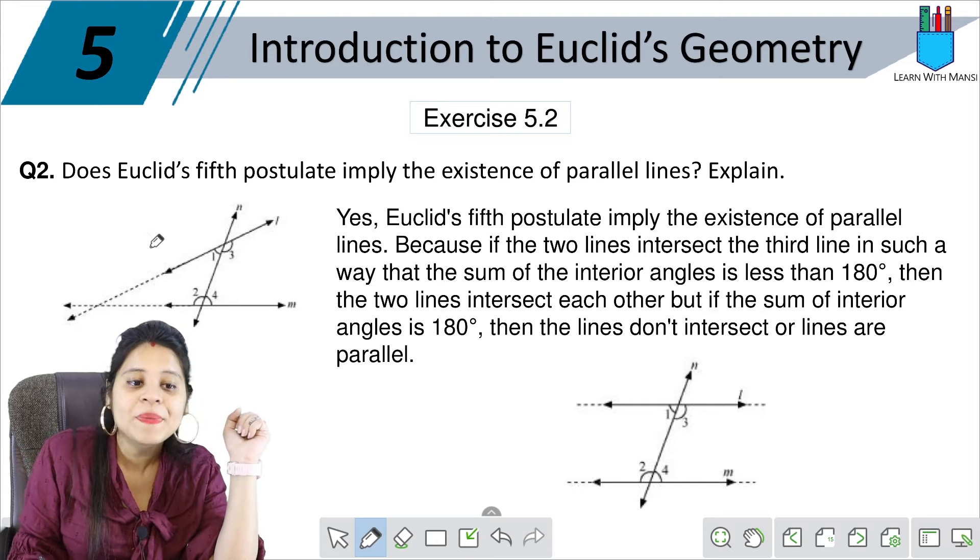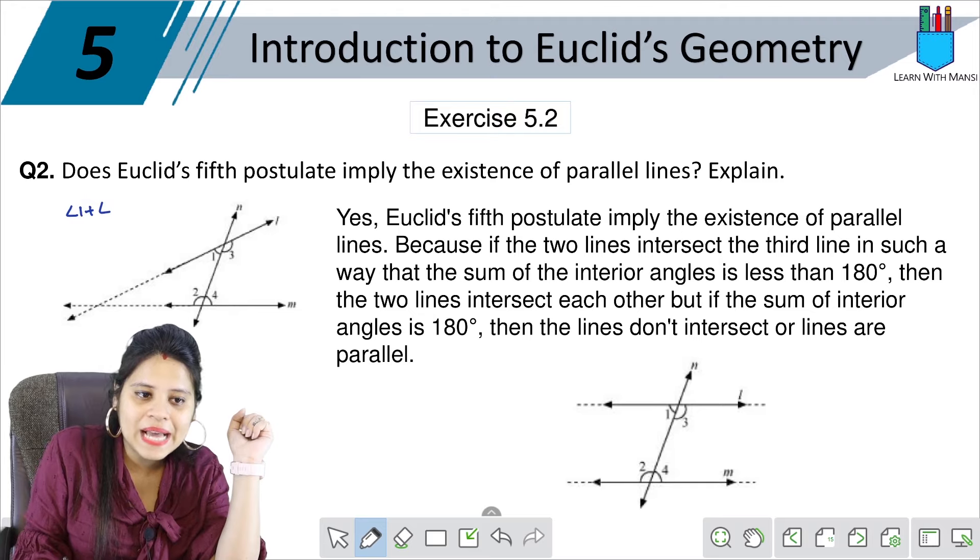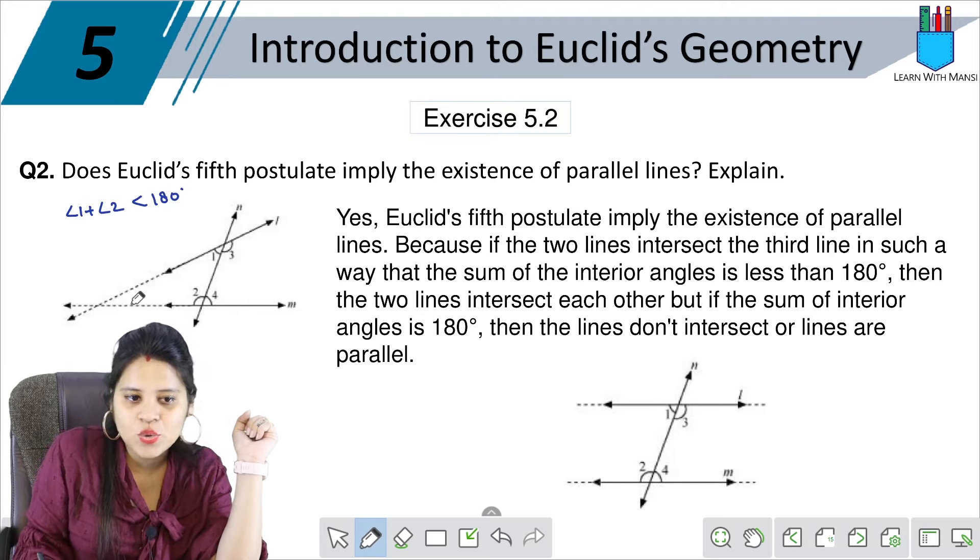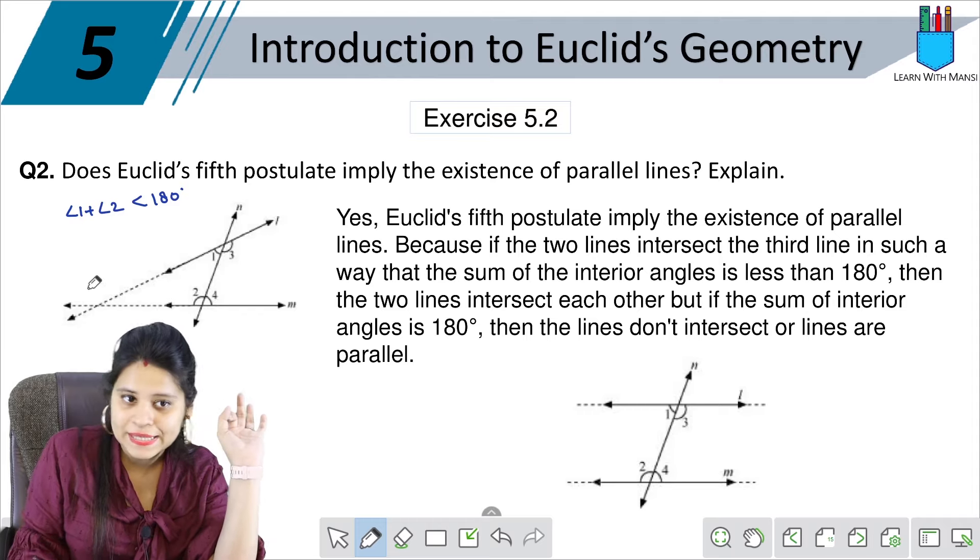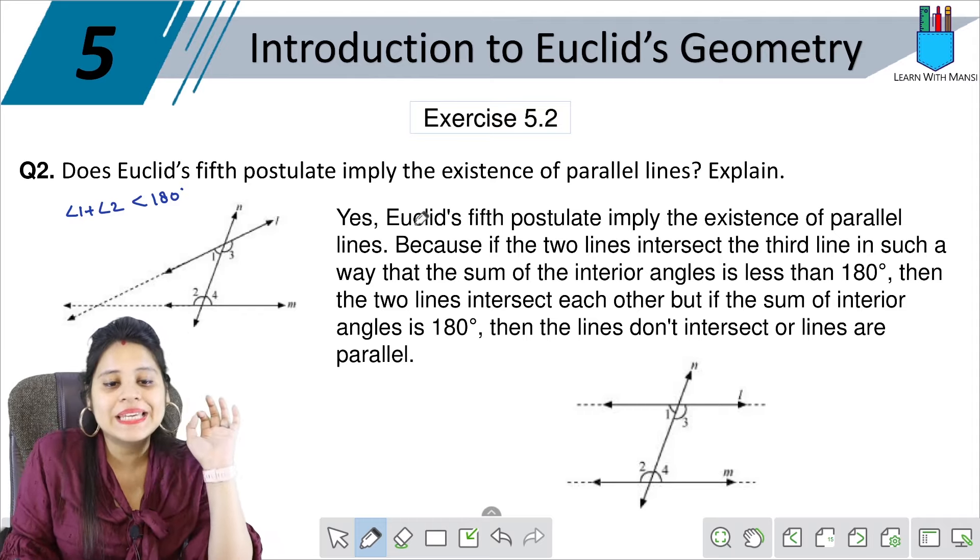As you can see, angle one and angle two, angle one plus angle two is less than 180 degrees. So the lines extend the line. It meets the line. It means it intersects the line. Now, this is what we have learned.